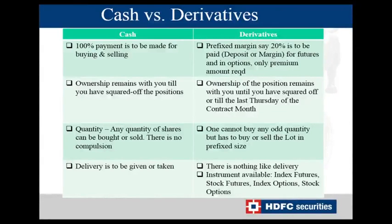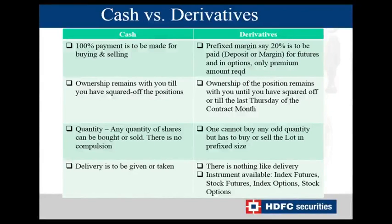In derivatives, we have something called expiry. Every last Thursday of the contract, the contract ceases to exist — this is known as expiry day. If Thursday is a holiday, the expiry falls on the preceding Wednesday. Either you square off willingly, or the exchange automatically squares off the position on expiry day. In the cash market, you can buy or sell any quantity of shares with no compulsion. But in the derivatives market, we cannot trade in odd quantities because we have something called a lot size — the predefined number of shares you can buy or sell. Nifty has a lot size of 75 and Bank Nifty has a lot size of 40, all defined by the exchange.